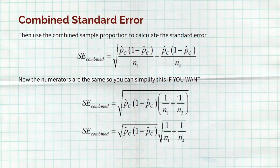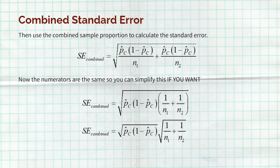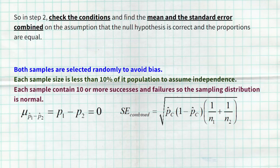You can also factor out the common numerator, giving you p-hat-c times (1 minus p-hat-c), multiplied by (1/n1 plus 1/n2), all inside the square root. There are a couple of different ways to write it, but they're all mathematically equivalent. In step two, check those conditions, find the mean of zero, and build that standard error combined on the assumption that the null hypothesis is true.